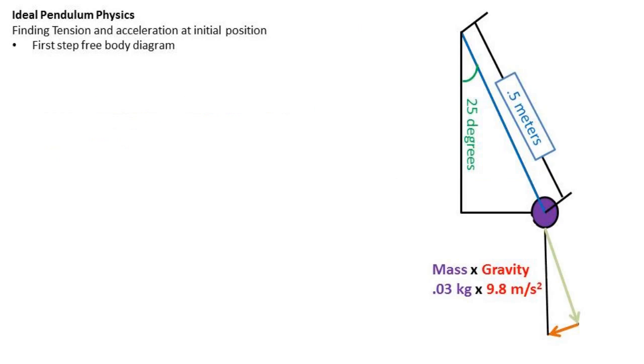We will start out by finding the tension and acceleration. The first thing that needs to be completed is drawing a free body diagram. The free body diagram consists of a triangle with a hypotenuse of mass times gravity. Now recall that the mass times gravity is always going to go straight down. Doing some basic trig,